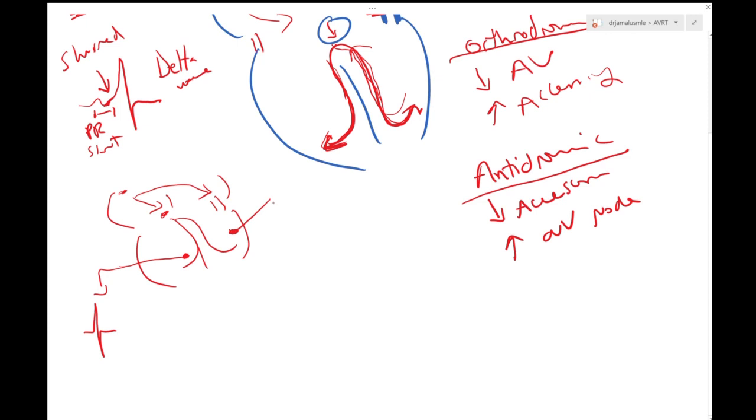So this will have an earlier start because the AV node is like a braking station, while this will just let the electricity go through. So this is why you will have an earlier start and it will be wider than the usual QRS. This earlier start will produce the delta wave.